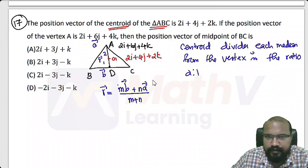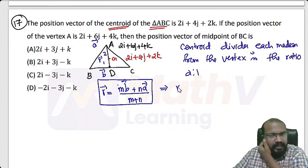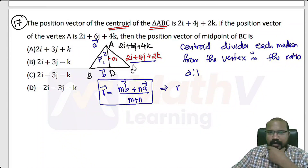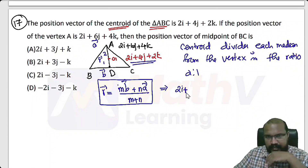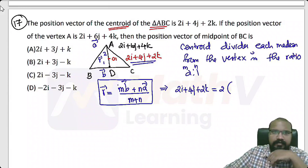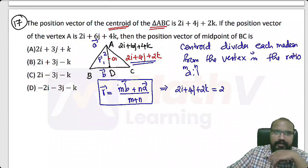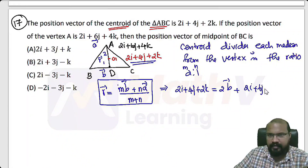Using the section formula to find the position vector of r: r equals m times vector b plus n times vector a, divided by m plus n. Here r is the centroid, so 2i plus 4j plus 2k equals 2 into vector D plus 1 into vector a, where m is 2 and n is 1, divided by 3. Vector a is 2i plus 6j plus 4k.